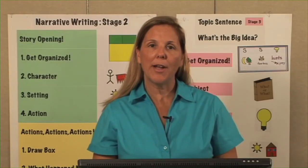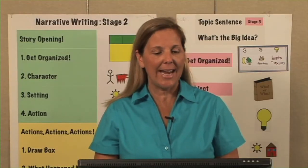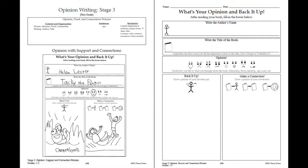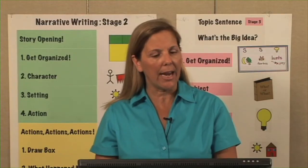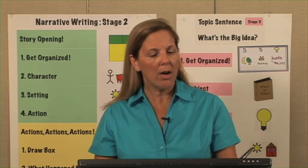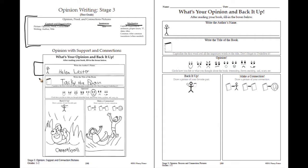Please turn to page 198 for Stage 3 of opinion writing. At the top of our page we have our descriptors — what skills are you teaching at Stage 3 when it comes to content, organization, sentences, and mechanics? At this stage we are looking at the author, the title, giving our opinion by just circling an emotion or what we think about the text.